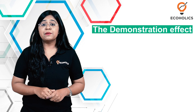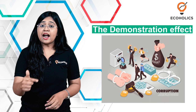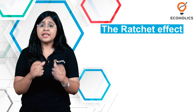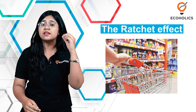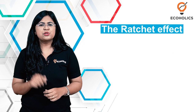Now let's talk about the ratchet effect. When income of individuals or households falls, it's observed that their consumption expenditure does not fall as much. This is because people try to maintain their consumption at the highest level attained earlier. This is partially due to the demonstration effect — people do not want to show their neighbors that they can no longer afford to maintain their standard of living. This observation is known as the ratchet effect.